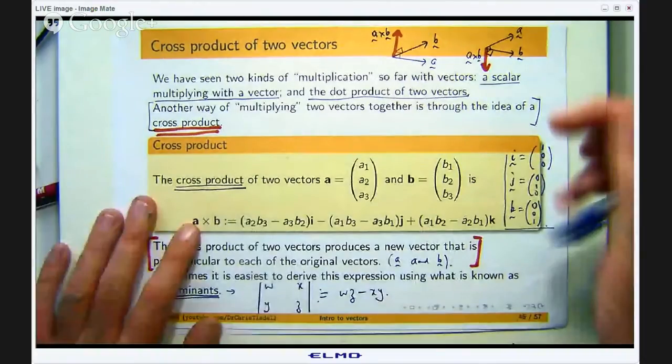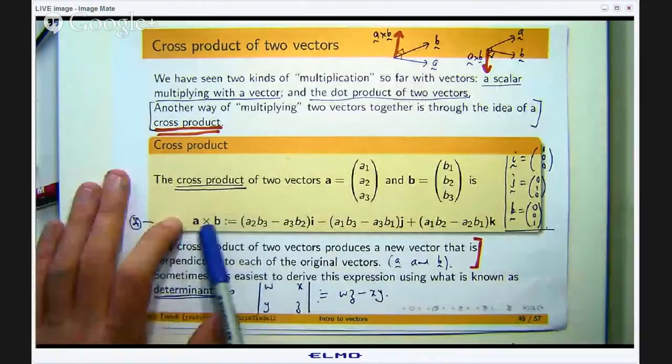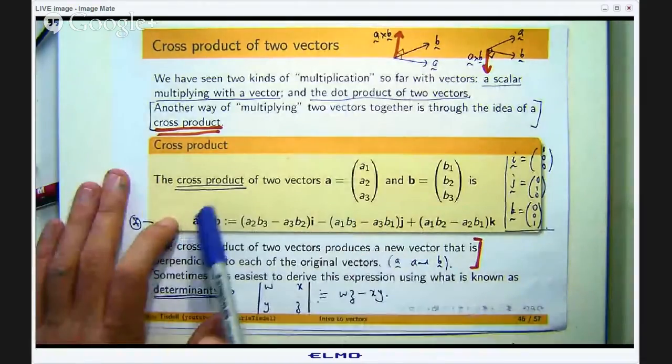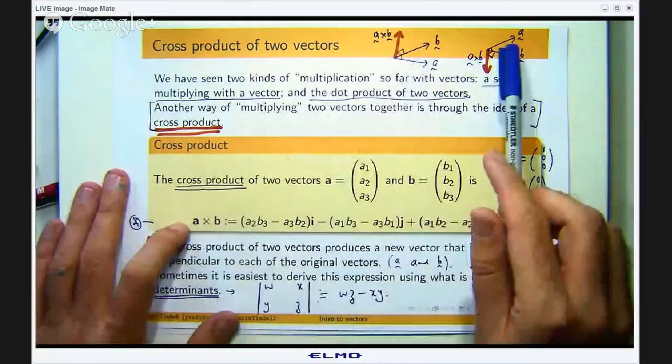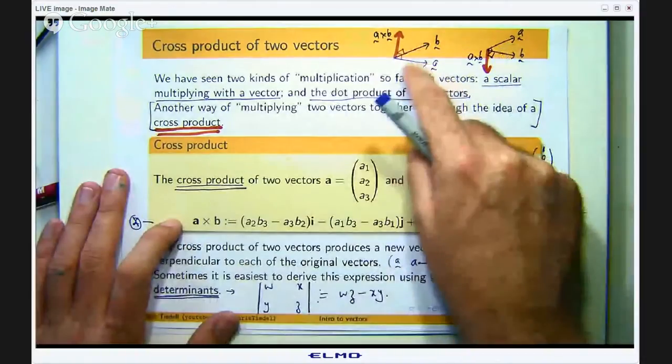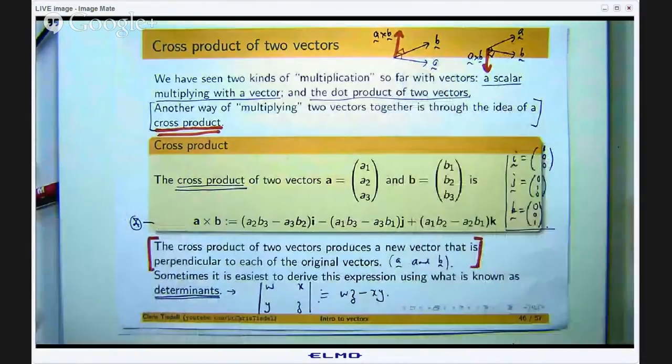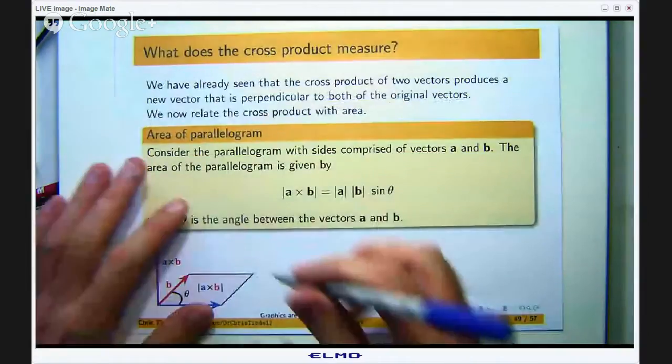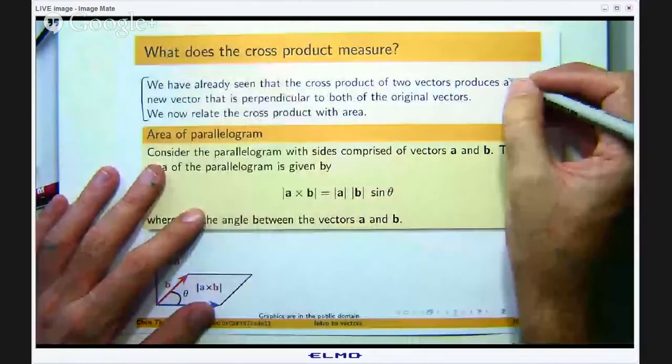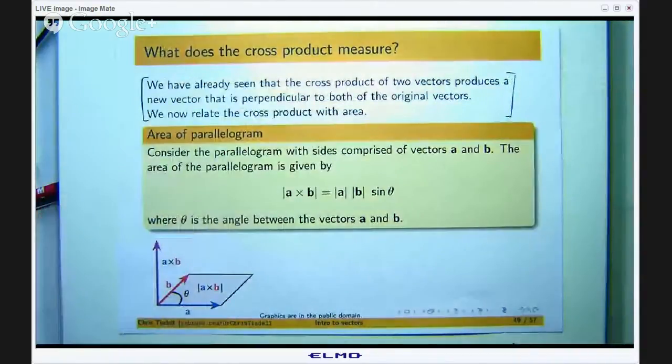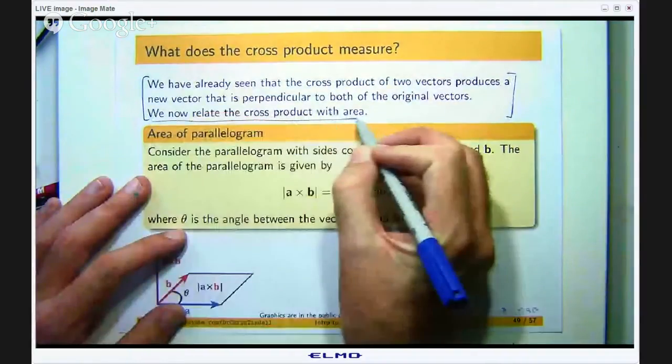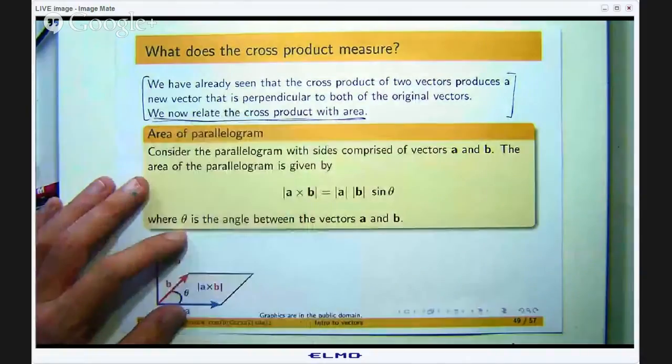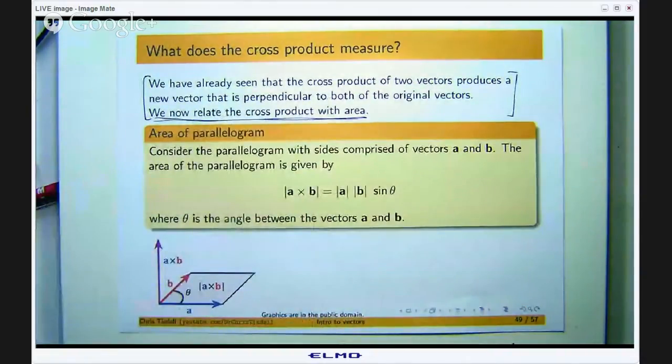The geometric interpretation of this multiplication is that the new vector a cross b is perpendicular to both the vector a and b and you know which way it points depending on the right hand rule. Okay so we have already seen that the cross product of two vectors produces a new vector that is perpendicular to both the original vectors. What I am going to concentrate in this presentation is on the area of a parallelogram and the relationship with the cross product.